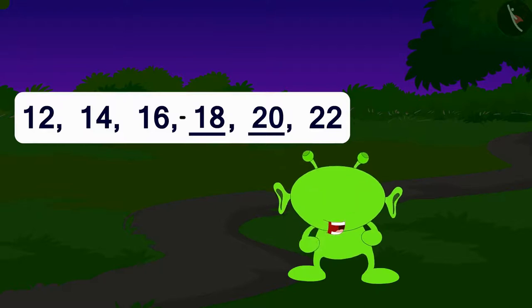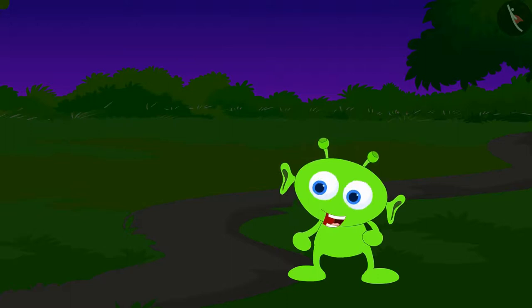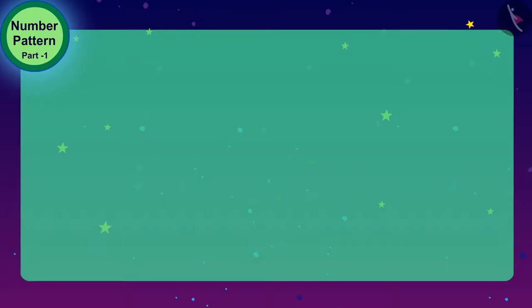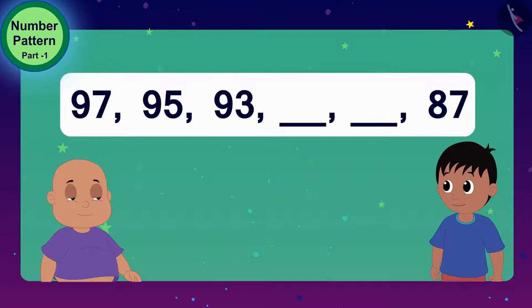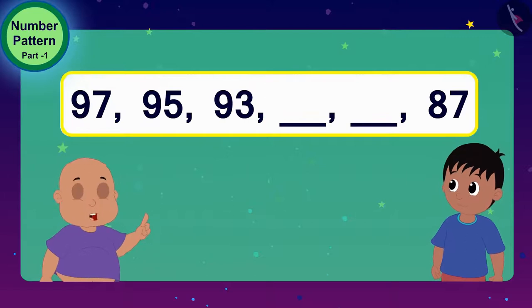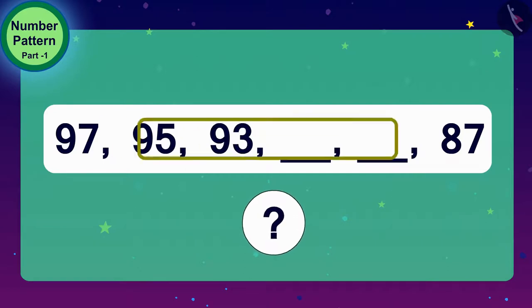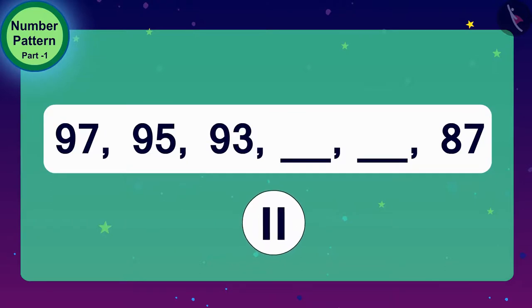Well done. You two have solved it perfectly. Let's see if you can solve my next puzzle. The alien now showed his second puzzle to Raju and Bablu. Raju, this puzzle looks harder than the first puzzle. Yes, Bablu. Let's find a solution together. Children, please also think what is the rule of this number pattern. If you wish, you can stop the video and think of the answer.